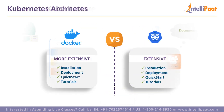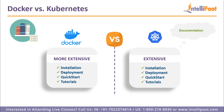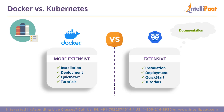Another parameter is documentation. Docker's documentation is more extensive than Kubernetes — it includes everything from installation to deployment, quick start instructions, and more detailed tutorials. Kubernetes documentation is less extensive than Docker's, but it does include everything from installation to deployment, quick start instructions, and more detailed tutorials as well.